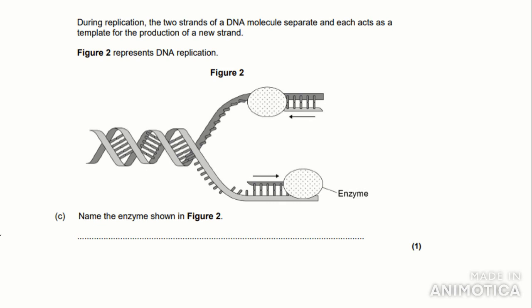During replication, the two strands separate and each acts as a template for a new strand. Name the enzyme shown in figure 2 — the answer is DNA polymerase. Don't confuse it with DNA helicase, which unwinds the double helix by breaking hydrogen bonds between complementary base pairs. DNA polymerase forms the sugar-phosphate backbone of the new strand.